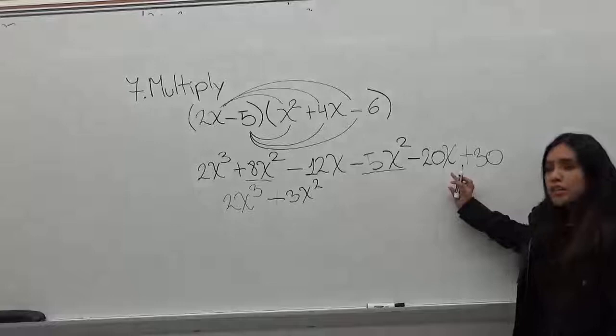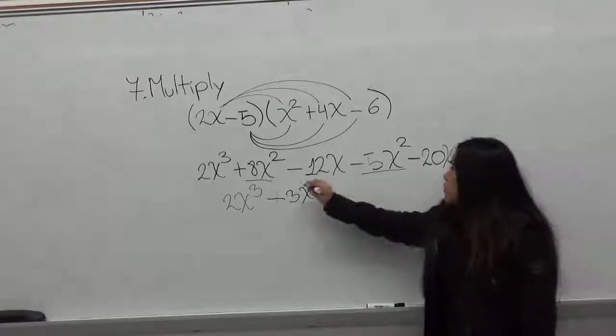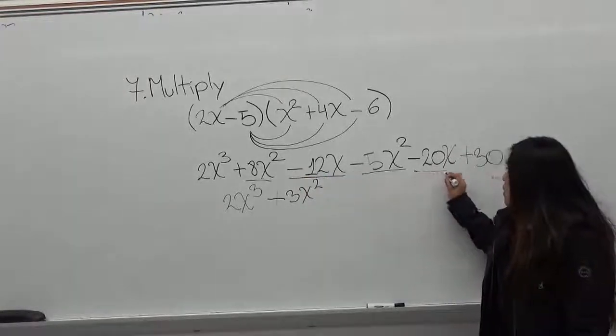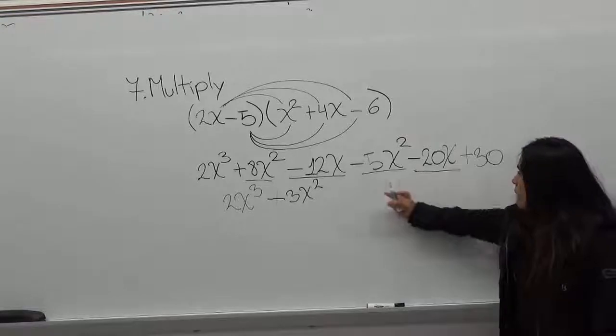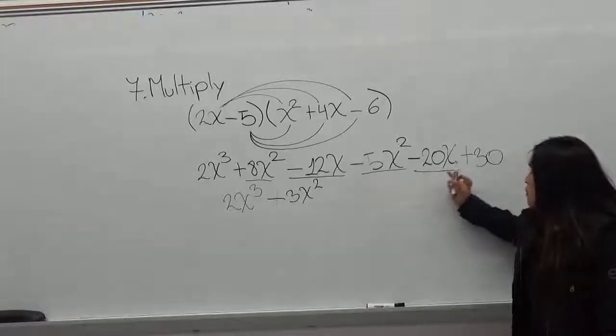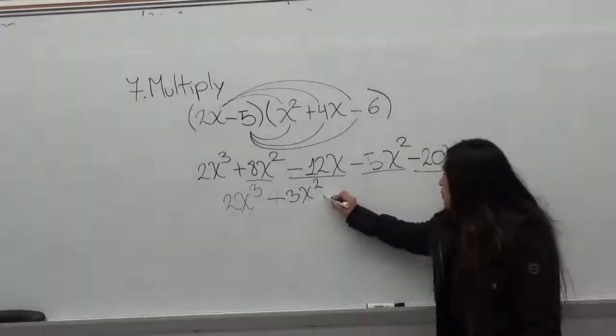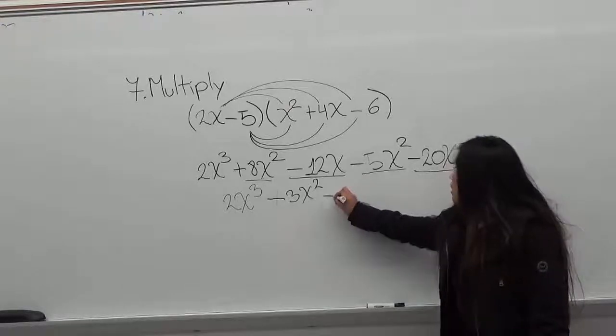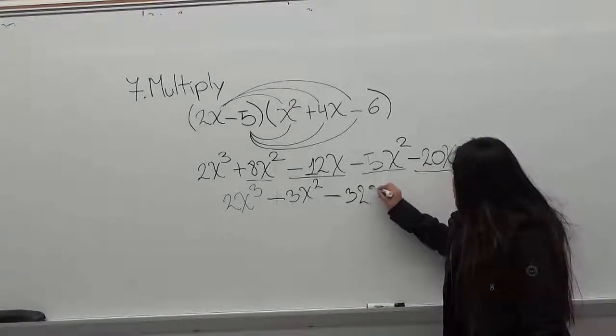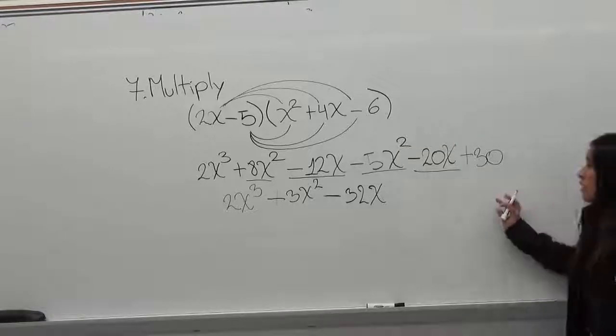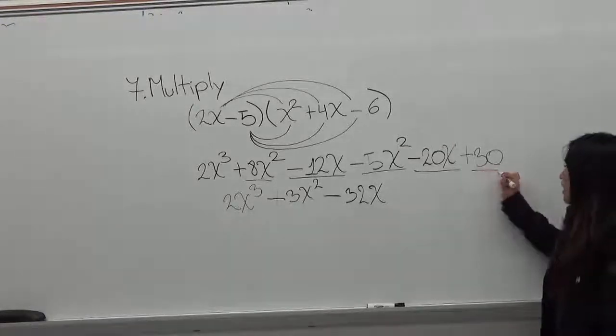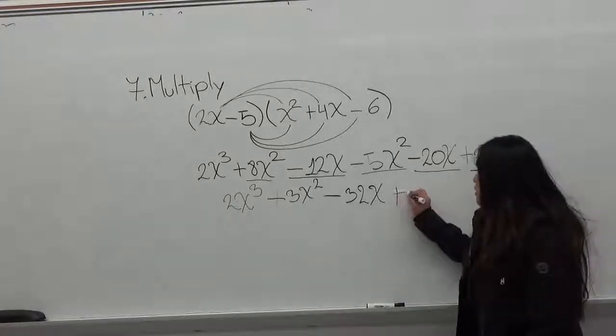Then you have the x terms, so you have minus 12x minus 20x, which gives you minus 32x. And you just have one constant term, so you leave it as plus 30.